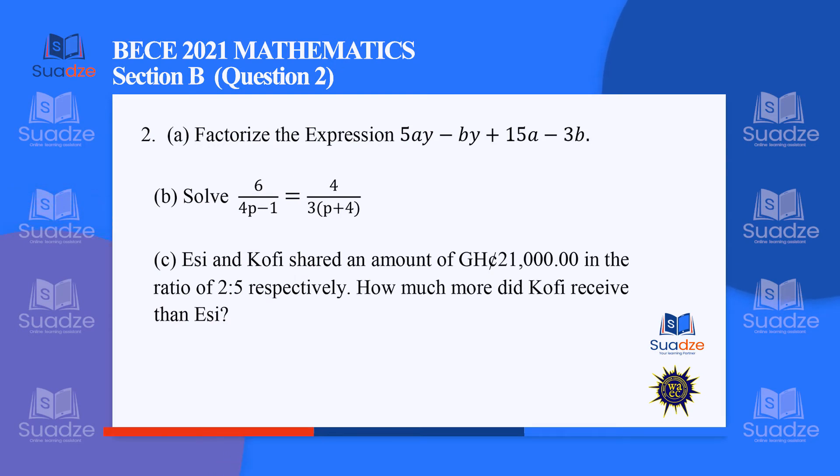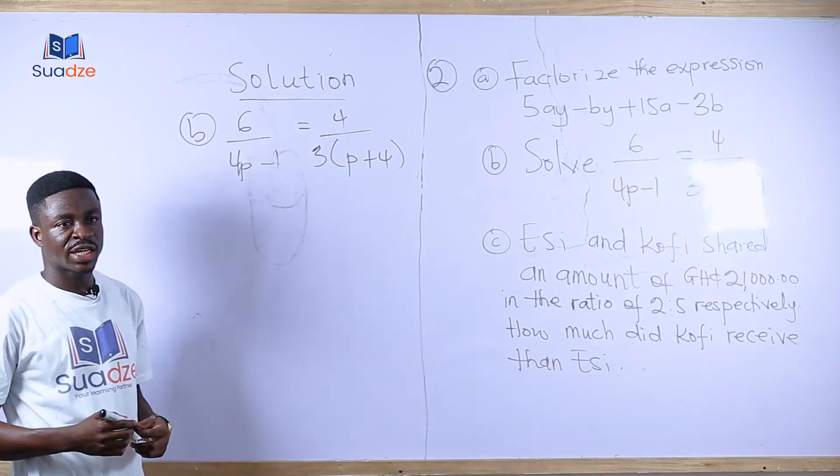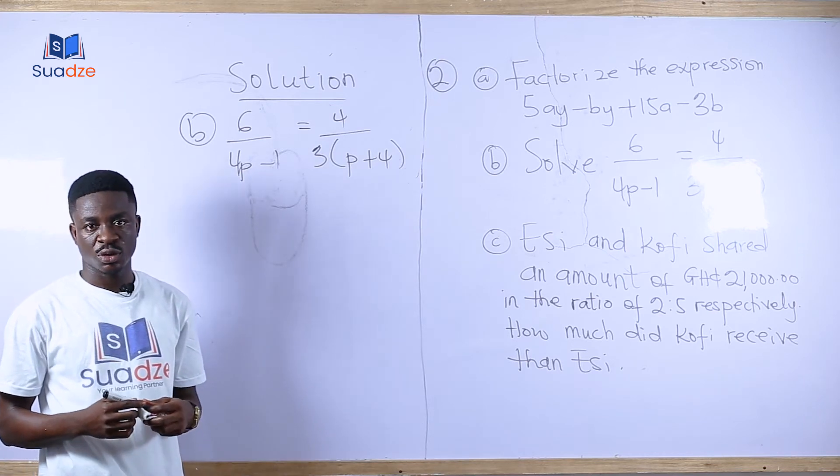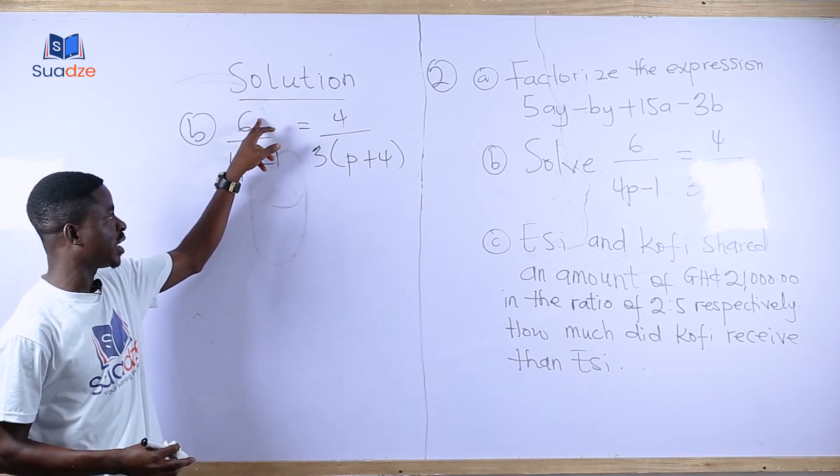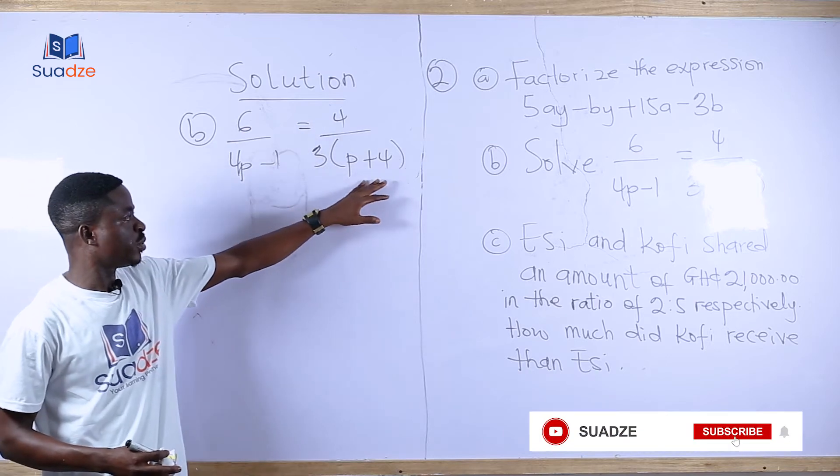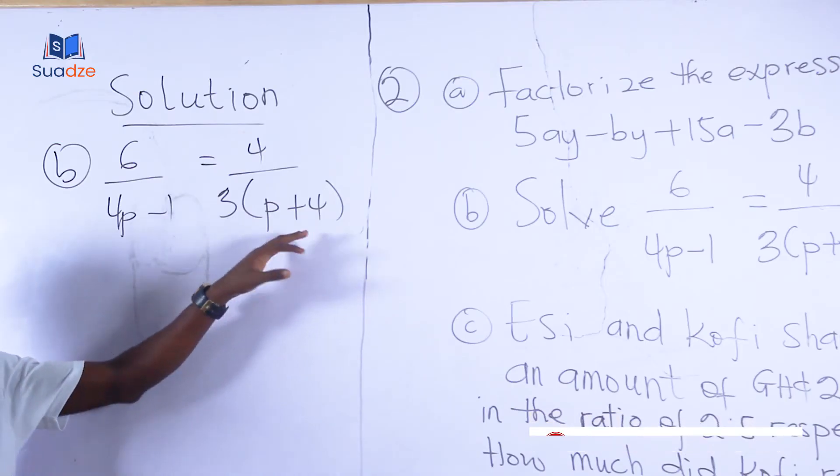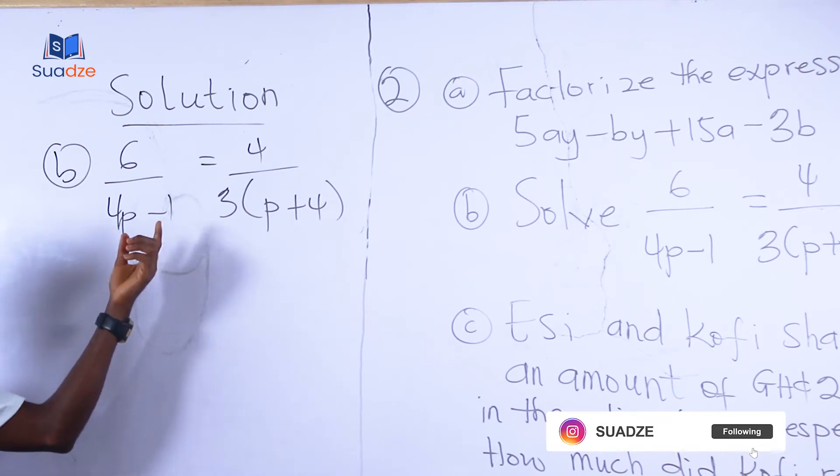This says that solve 6 divided by 4p - 1 equals to 4 divided by 3(p + 4). When you have a question like this, we apply what we call cross multiplication, which means that the numerator on the left-hand side is going to multiply the denominator on the right-hand side, and the denominator of the left-hand side is going to multiply the numerator at the right-hand side.